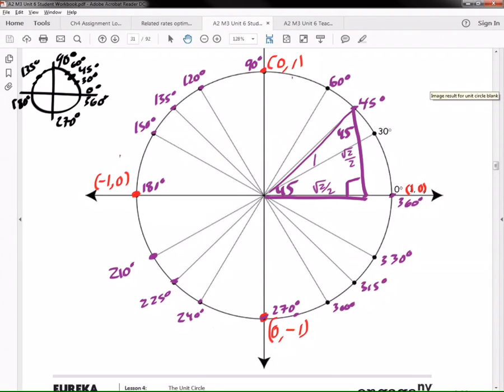Take that triangle and put it on your unit circle like so. So now when you take that triangle and put it on your unit circle, you can tell me what the coordinates are for the 45 degree triangle, for the 45 degrees inside of the unit circle. What are the coordinates for this point right here?